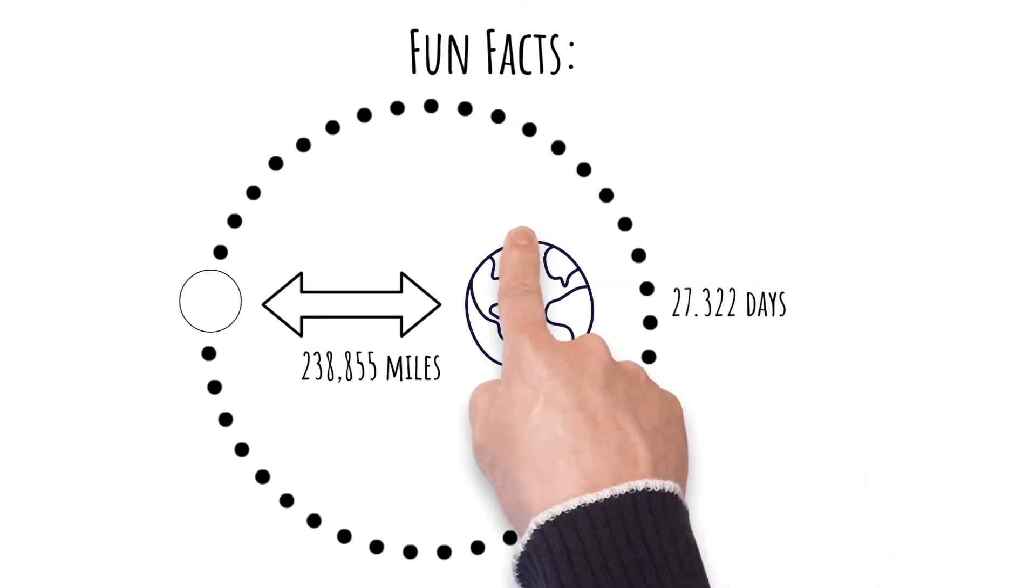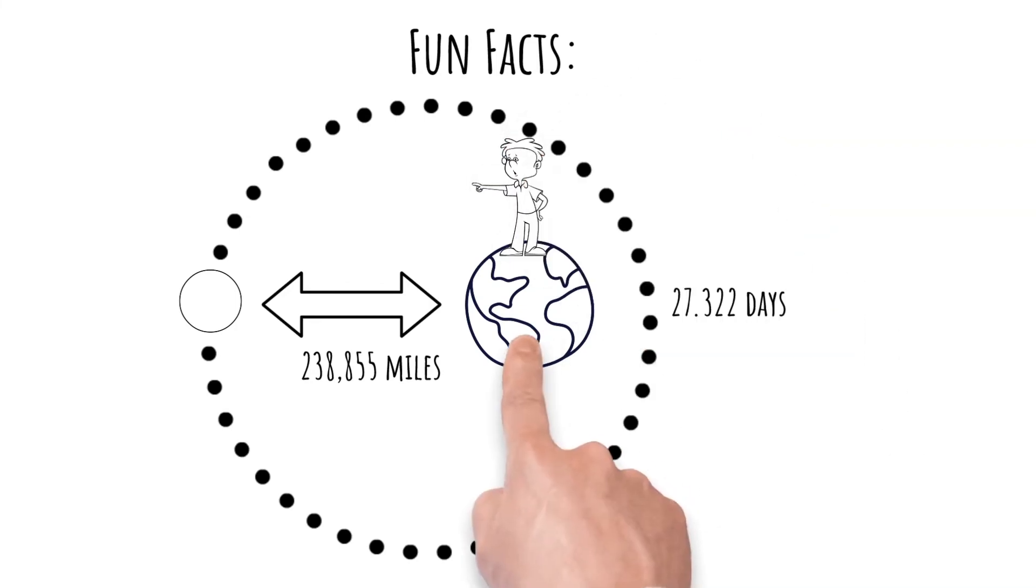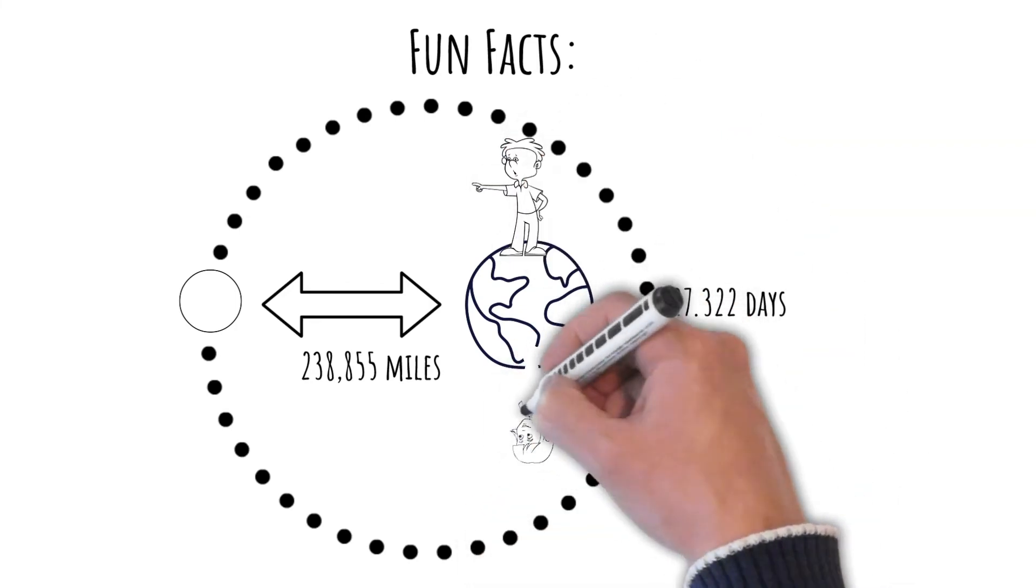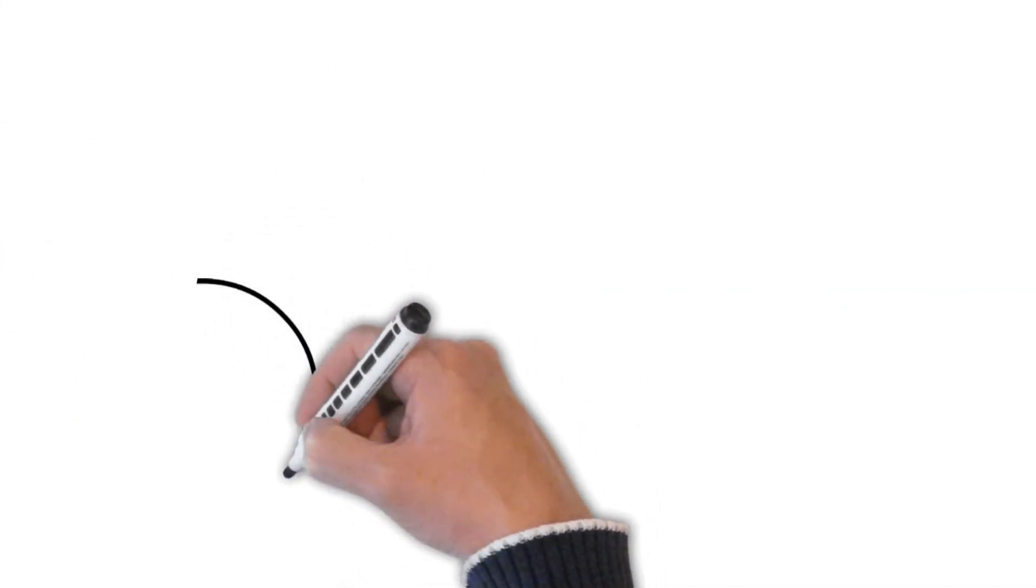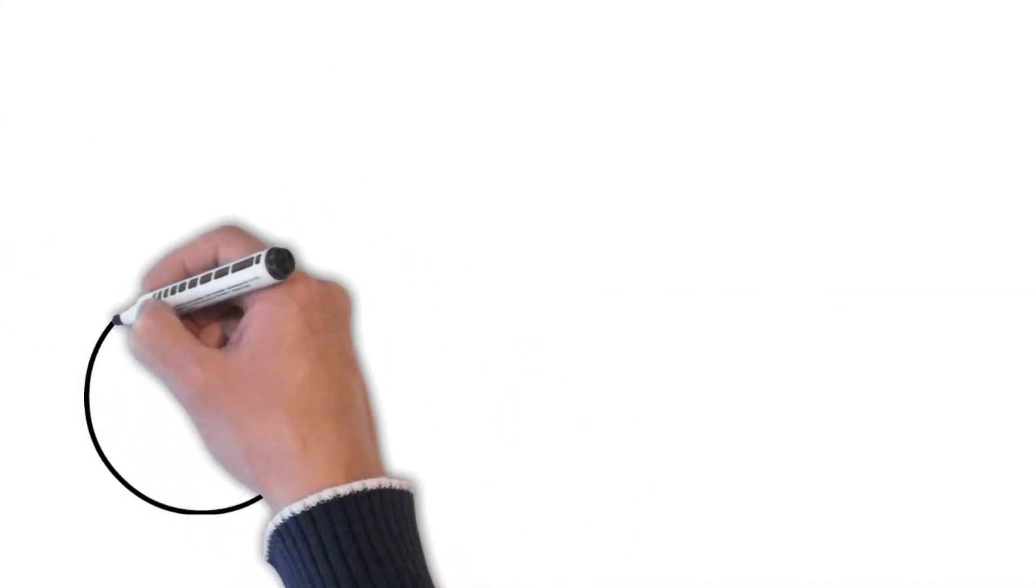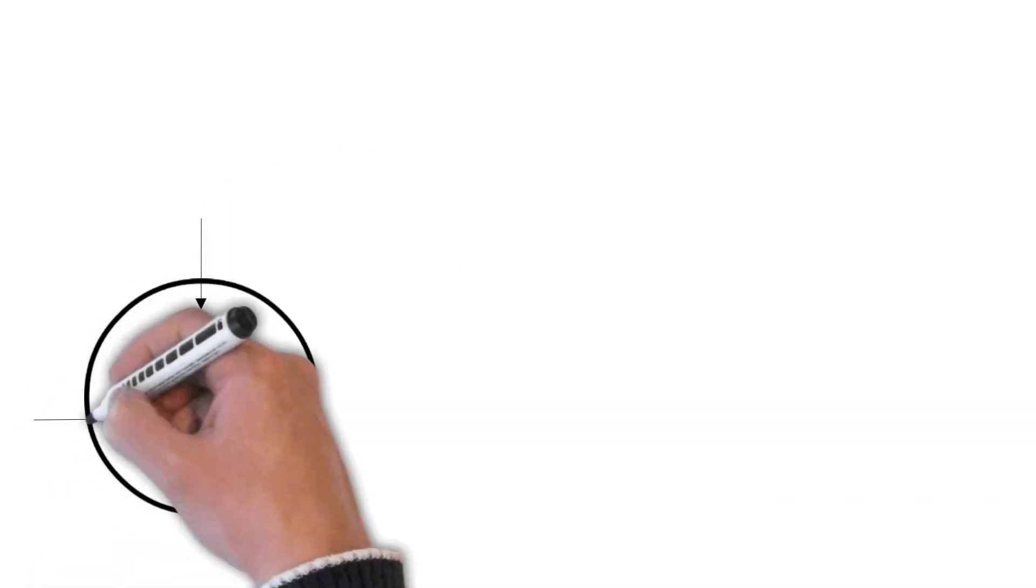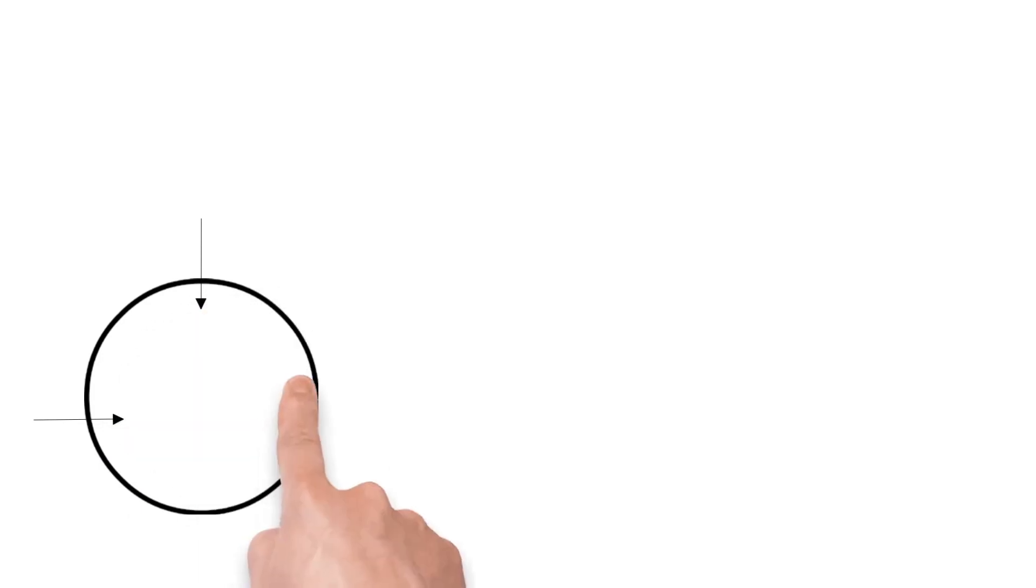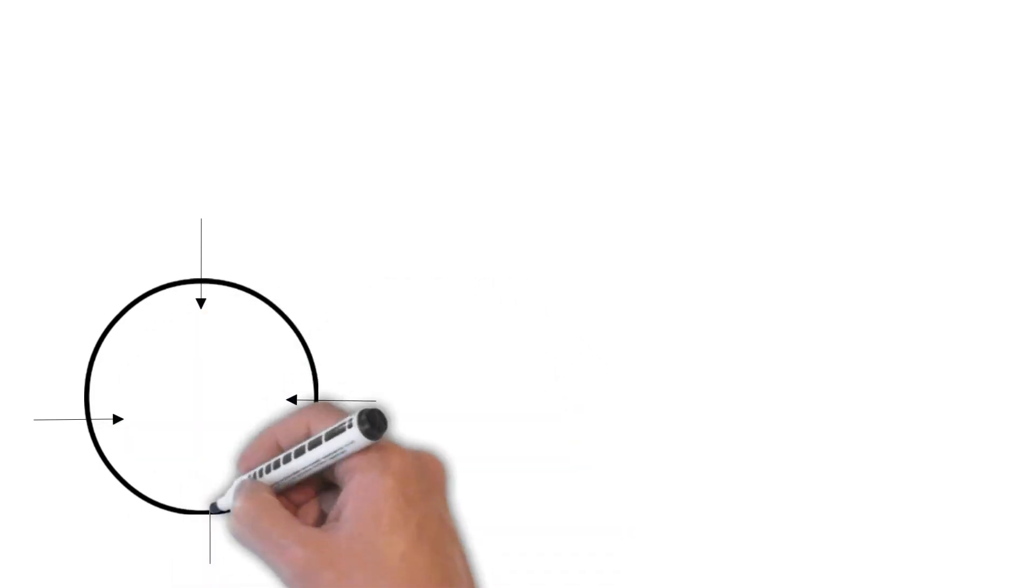Interestingly, everyone sees the same phases of the moon from everywhere on Earth. The moon has gravity but has less due to its smaller mass. The smaller the mass of the planetary object, the less gravity it will have.